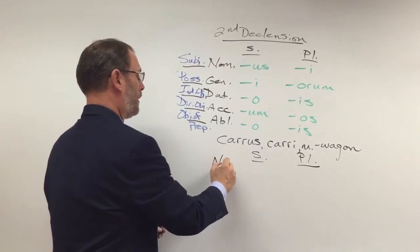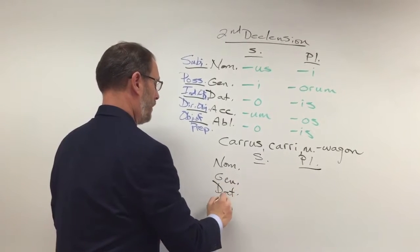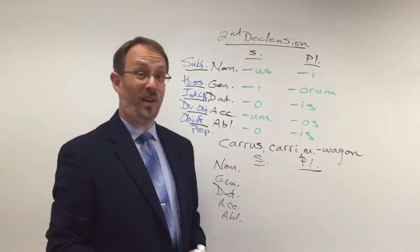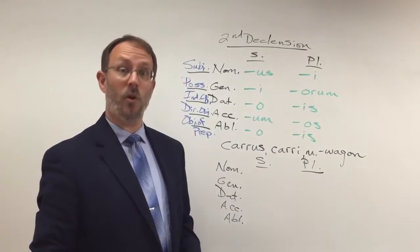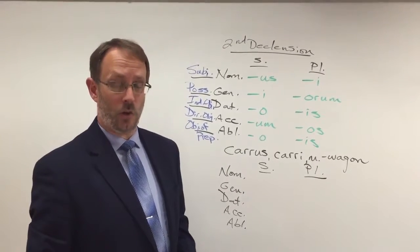We'll set the chart up for you. Singular and plural. Nominative, genitive, dative, accusative, and ablative down the side. See if you can decline that word in all the cases, singular and plural, just as we used to do with first declension. Go ahead and hit pause on the video now and give that a try.